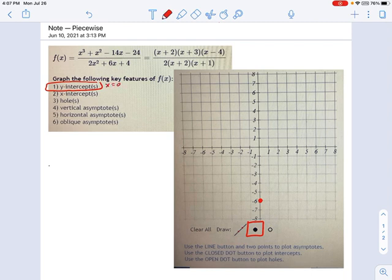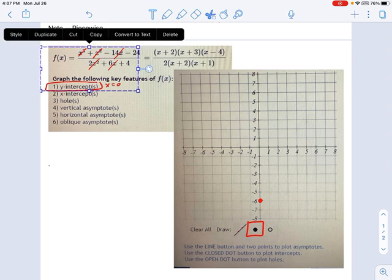Another way to think about this is when you find the y-intercept, we're saying x equals 0. So you just plug in x equals 0, and all these x's cross out, and all you're left with is negative 24 over 4. So that's the y-intercept done. That's one of the easy ones.